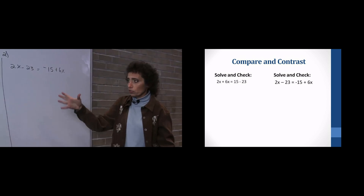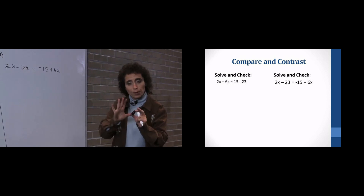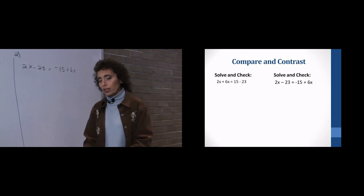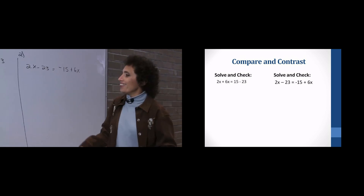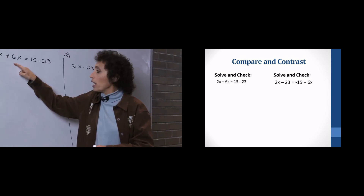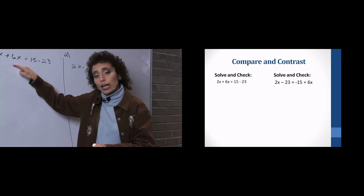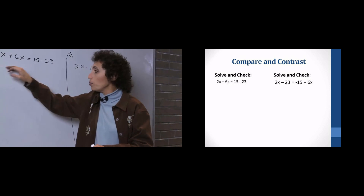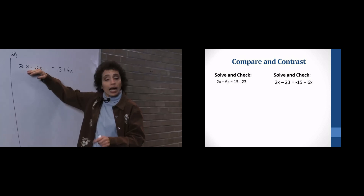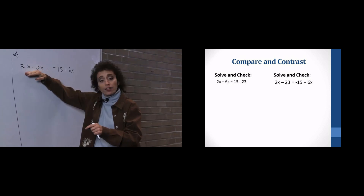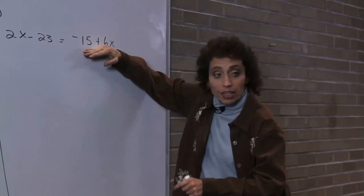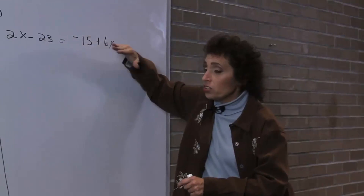Let's look at the two of these and see how they're different. Don't solve them yet, just think about how they're different. Here's how they're different. This first equation has terms you can combine on both sides. This one does not. I cannot combine these because they're not like terms, and I cannot combine these because they're not like terms. So this is different.